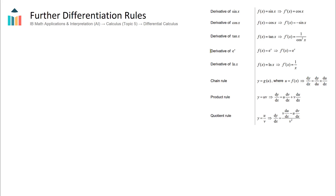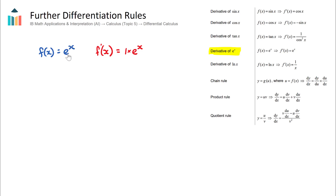The derivative of e to the power of x is interesting. If f(x) = eˣ, the derivative is 1 times eˣ. When taking the derivative of e to the power of something, you take the derivative of the power — here the derivative of x is 1 — and that comes out the front, while everything else stays the same.